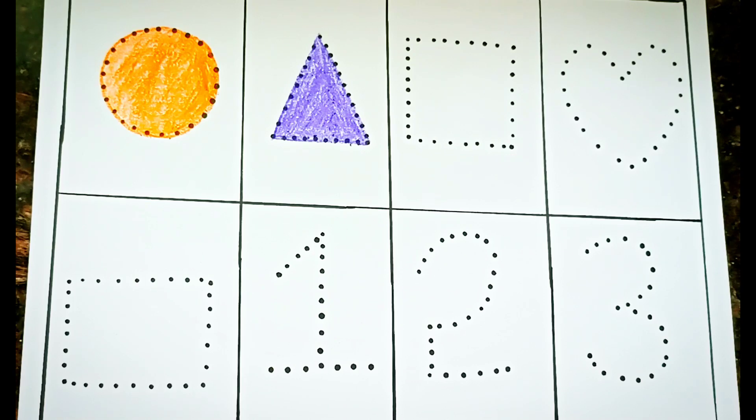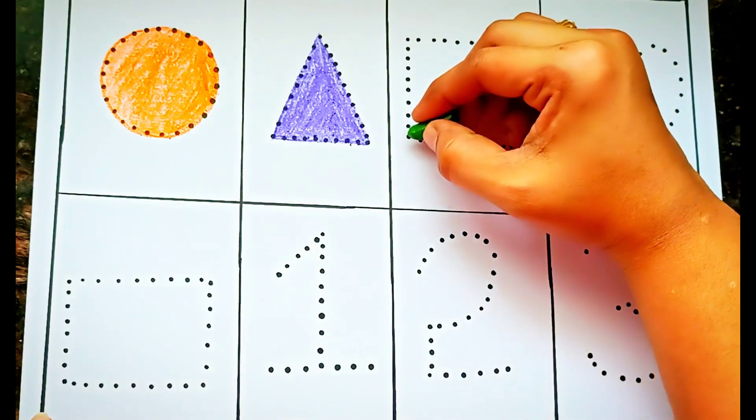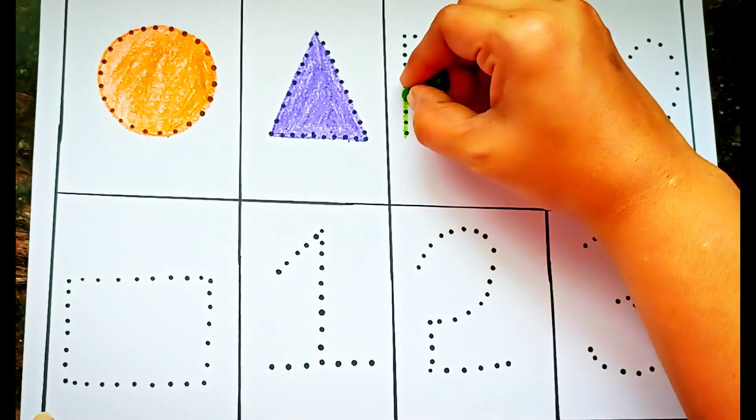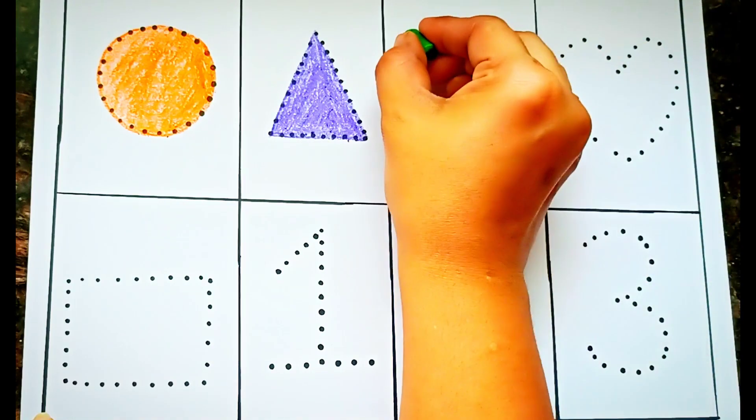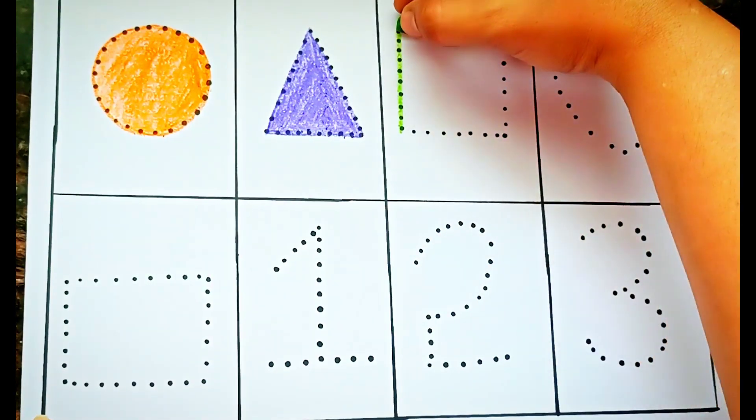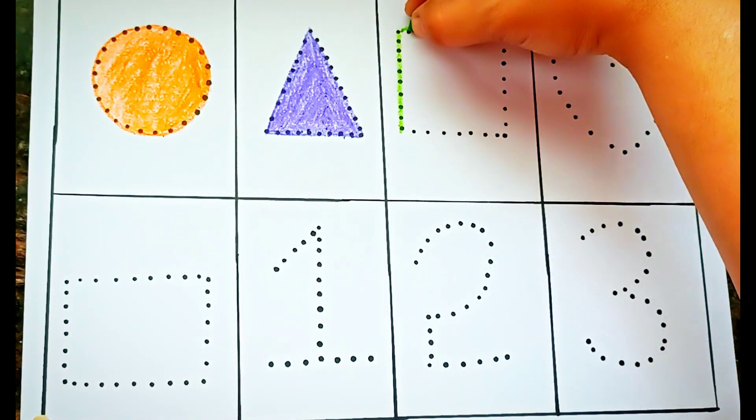Next, which shape is this? This is a square. Let us draw a square in green color.